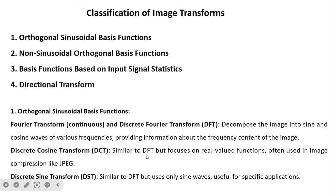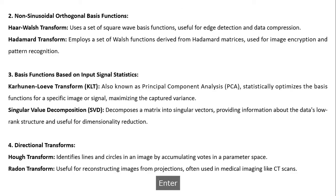The Discrete Cosine Transform is similar to the DFT but focuses on real-valued functions, because all values in its basis function formula are real, whereas Fourier is a mixture of real and complex components. DCT is often used in image compression like JPEG. The Discrete Sine Transform is similar to the DFT but uses only sine waves and is useful for specific applications.